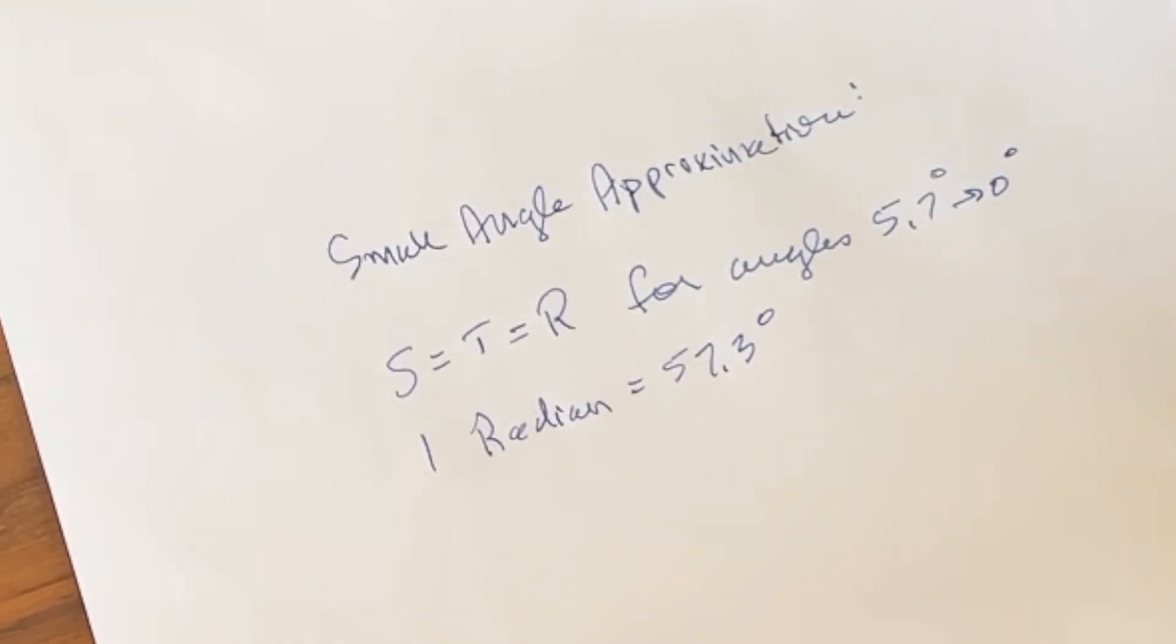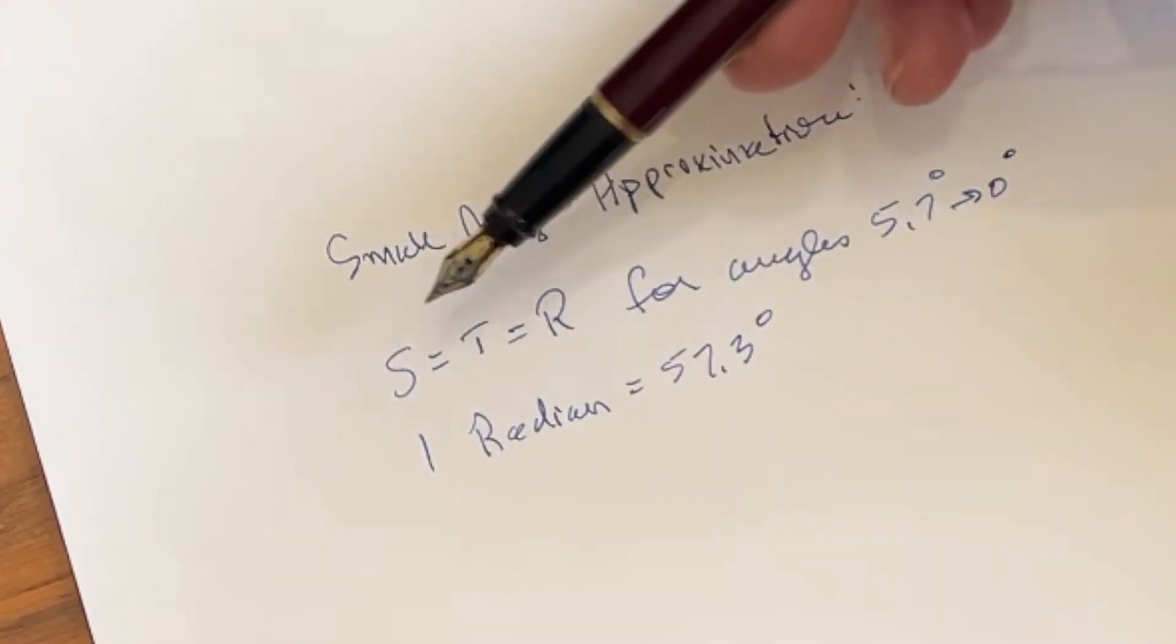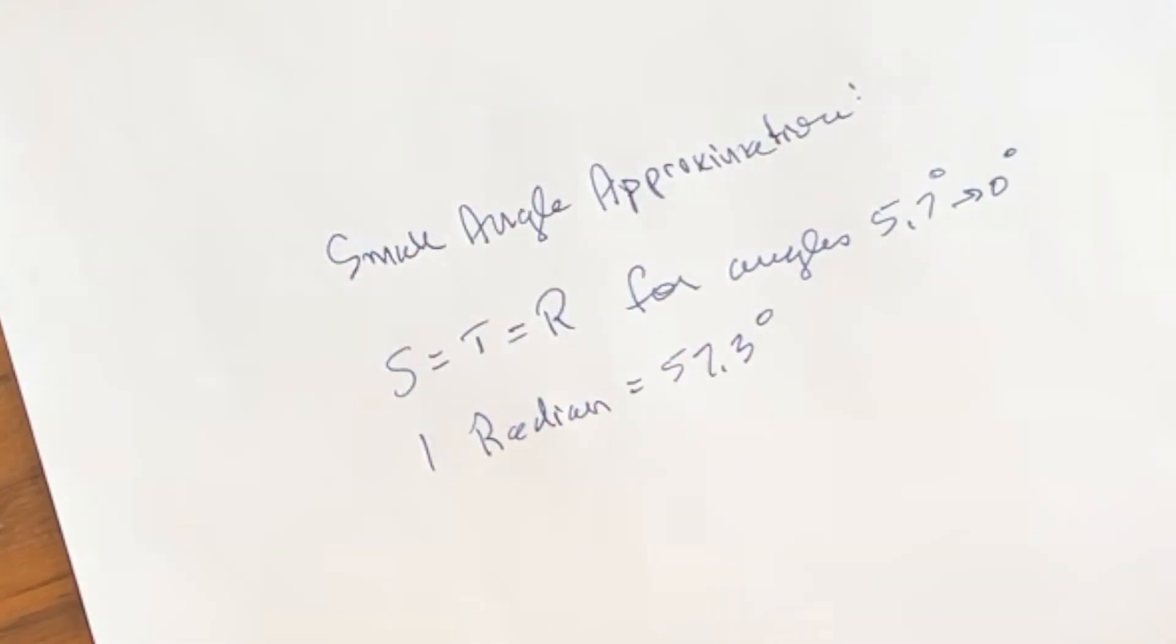Okay, what the small angle approximation says is that for small angles between say 0 and 5.7 degrees, the sine will equal the tangent, equals the number of radians in that number of degrees, and one radian is 57.3 degrees.